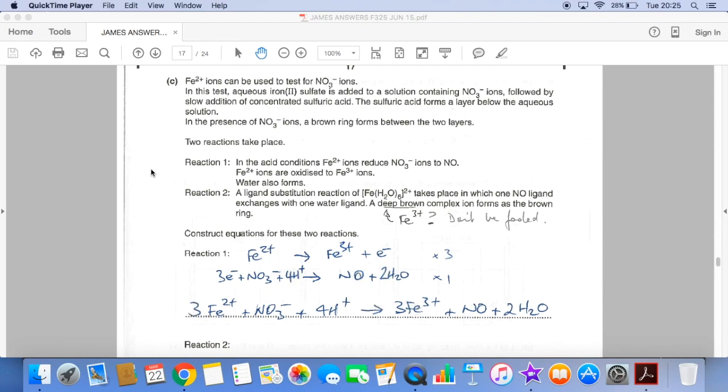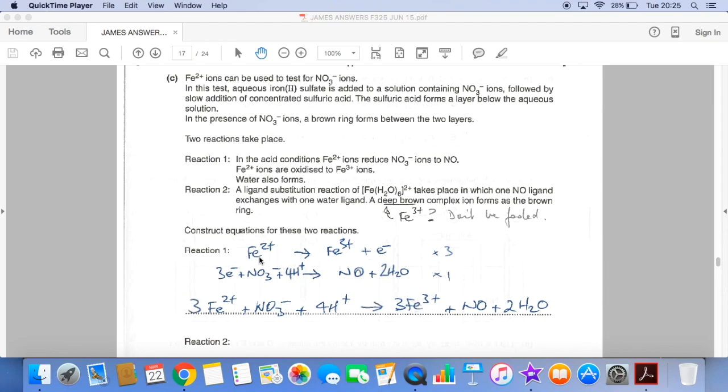So the final part of the question now, we're given a lot of information to process and then told that two reactions take place. Reaction 1, Fe2+ is oxidized to Fe3+. So the half equation for that is Fe2+ to Fe3+ plus an electron. And then the other half equation, the NO3- ions are reduced to NO. So there's the NO3-. There's the NO. And then we're going to construct the half equation.